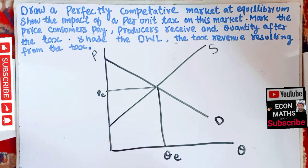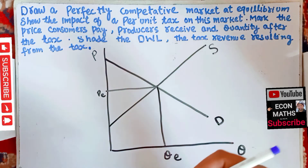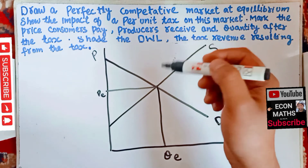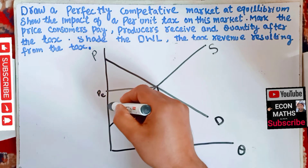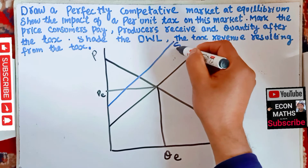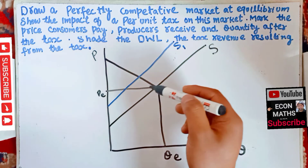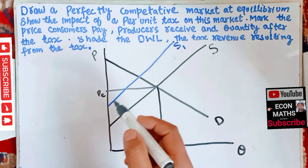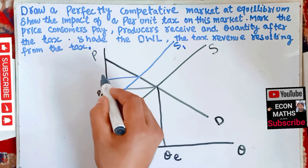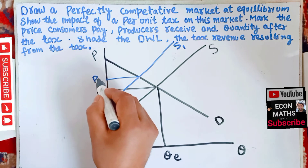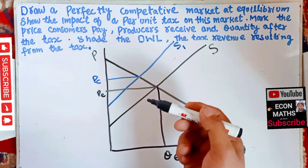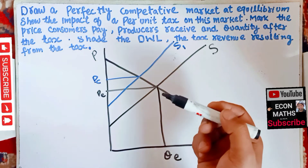Now we have to see the impact of a per unit tax. The tax shifts the supply curve to the left. By imposing a per unit tax, the supply curve will shift to the left — let us say this shifts to S1. So after imposing the per unit tax, the supply curve shifts to S1. The new price charged will be PC — PC will be the new price charged after the tax.